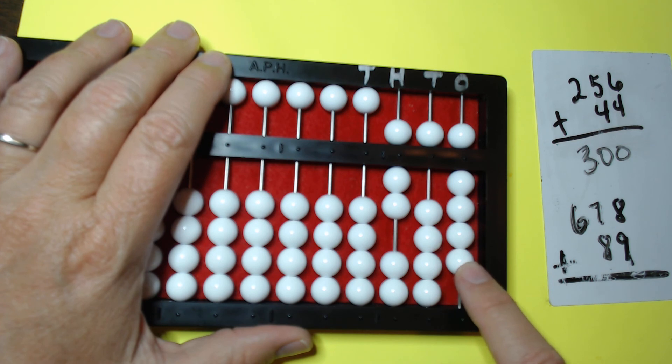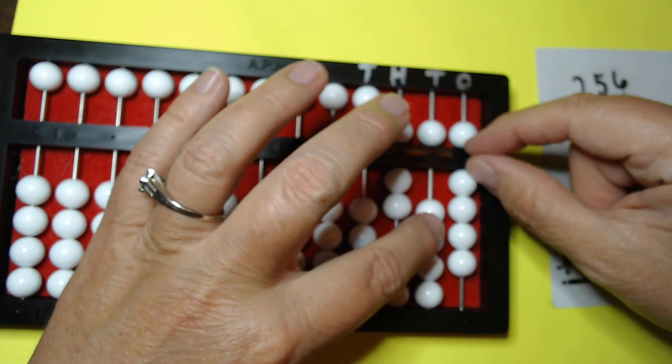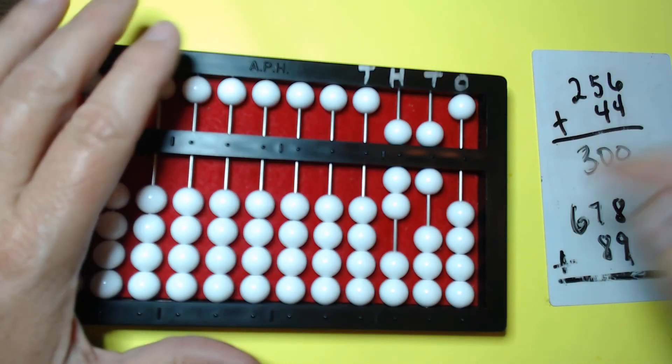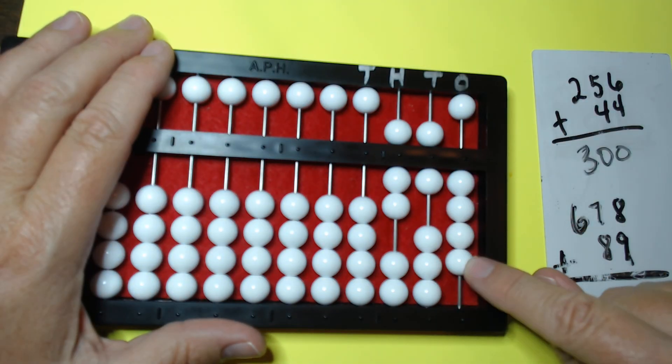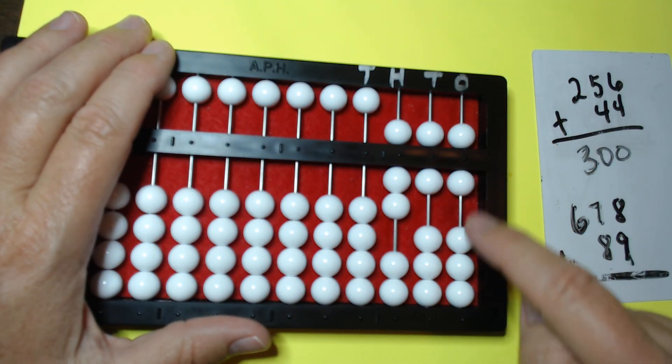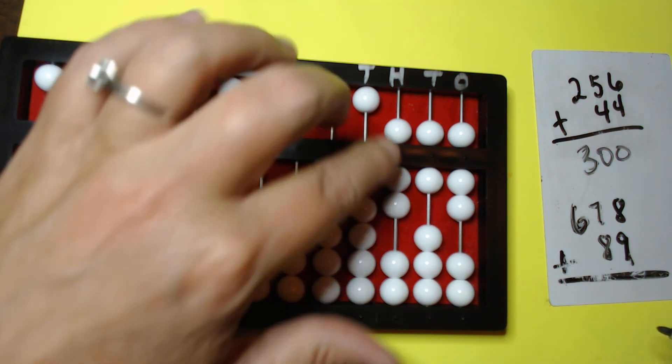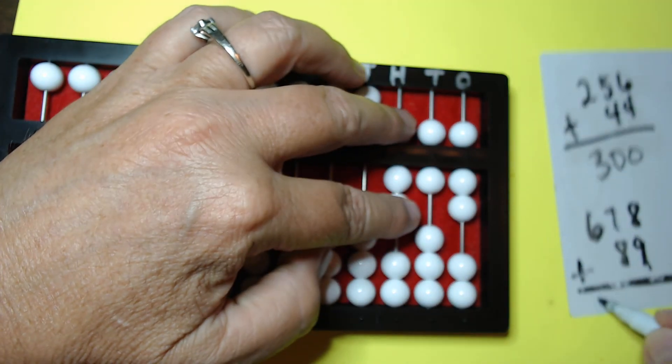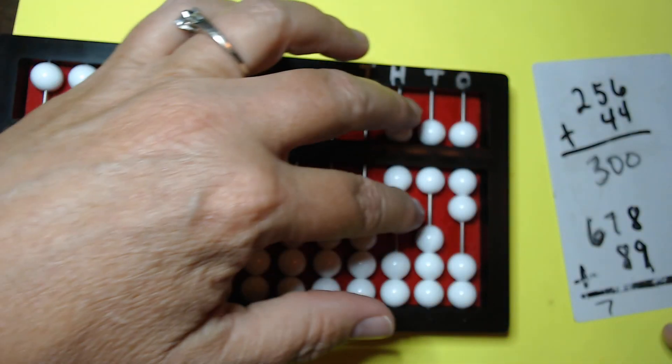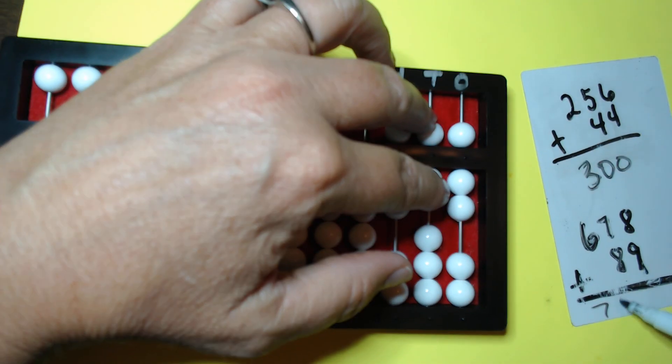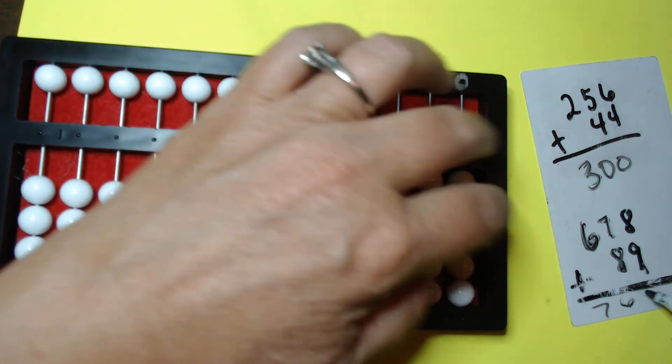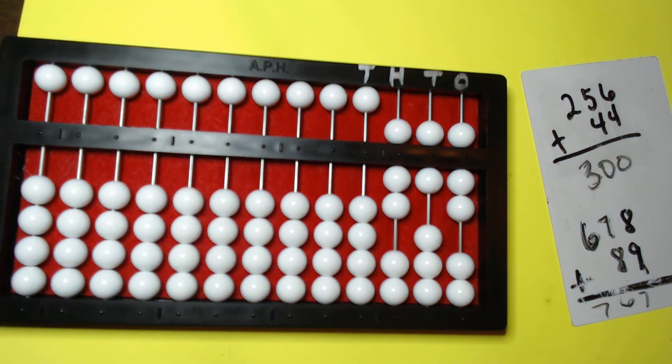1. We have to make an exchange. 2, 3, 4, 5, 6, 7, 8, 9. So that gives us an answer of 767. So that's 5, 6, 7, one hundred, 67.